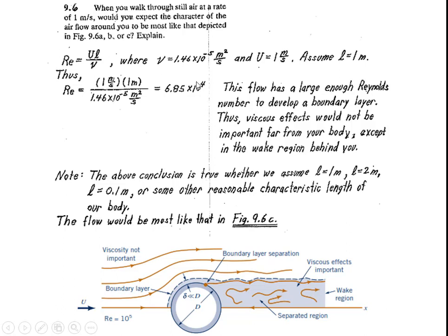We have speed of air. We take the viscosity at any temperature, let's say 25 degrees Celsius. The velocity is 1 meter per second and we assume the characteristic length is 1 meter. I will talk about this length again. So if I take Re = (1 × 1)/ν, the Reynolds number comes out to be 6.85 × 10⁴.